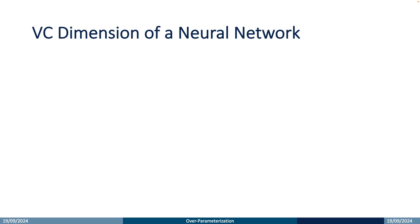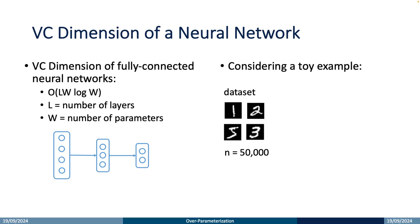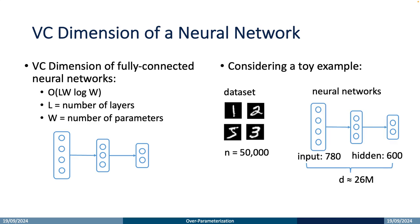Here we discuss what happens when we apply the VC bound to a neural network. The VC dimension of a multilayer perceptron is proportional to the number of layers L and the total number of parameters W times the log of W. However, consider a toy example such as MNIST, which only contains 50,000 samples. For a simple neural network with input layer width 784 and hidden layer width 600, its VC dimension will be around 26 million — far larger than the number of samples. Hence, this model must shatter the training samples, resulting in severe overfitting. However, the testing error of this neural network on MNIST typically achieves less than 0.1, which is far from overfitting. The VC bound cannot adequately explain why high model complexity does not lead to overfitting.